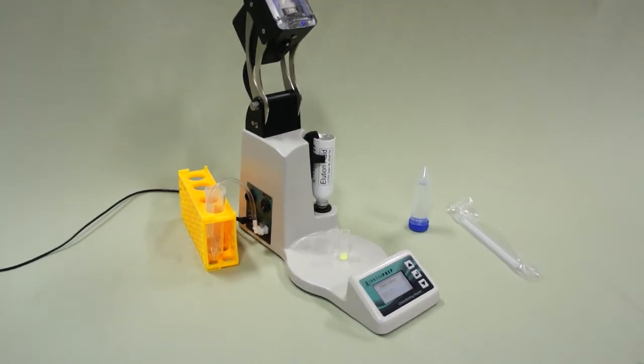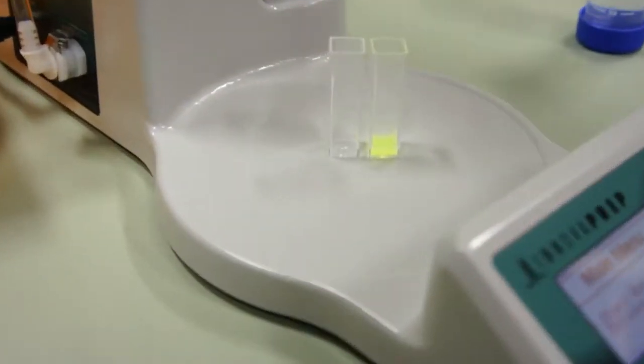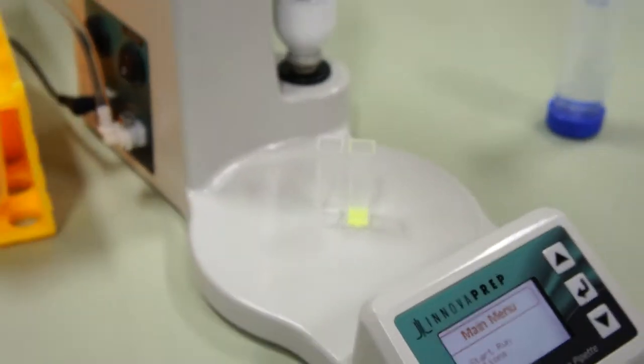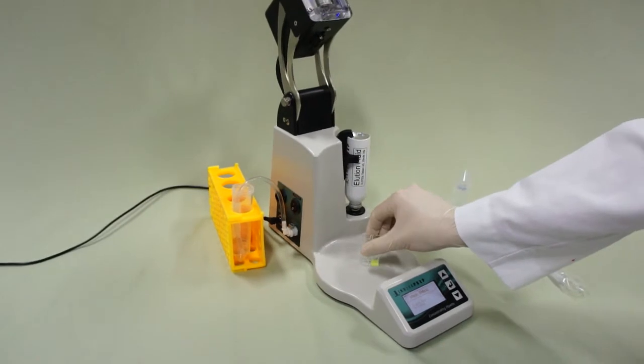Here is the test setup. The cuvette on the right contains 150 microliters of concentrated one micron carboxyl coated polystyrene microspheres. The empty cuvette will be used to collect the sample once it has been reconcentrated.